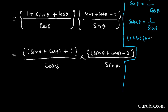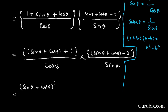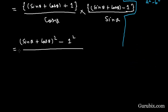We can now apply the identity (a + b)(a - b) = a² - b². Here, a = (sin θ + cos θ) and b = 1. So the numerator becomes (sin θ + cos θ)² - 1², all over sin θ · cos θ.